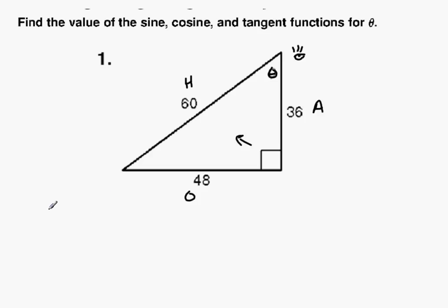So sine, the sine ratio for theta is opposite over hypotenuse. In this case, it's going to be 48 over 60, which can be reduced to 24 over 30, which can be reduced again to 12 over 15, and finally reduced to 4 over 5.